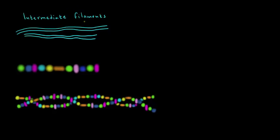Intermediate filaments are different than microtubules and microfilaments in that they're pretty much permanent. Once they're made by the cell, they kind of stay put as opposed to microtubules and microfilaments that are dynamic and constantly change depending on the needs of the cell.